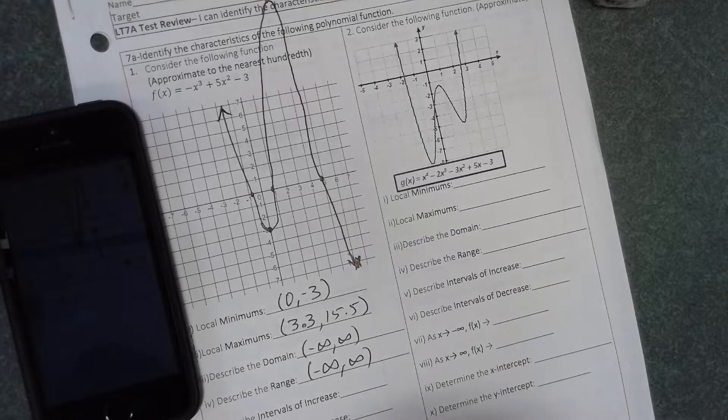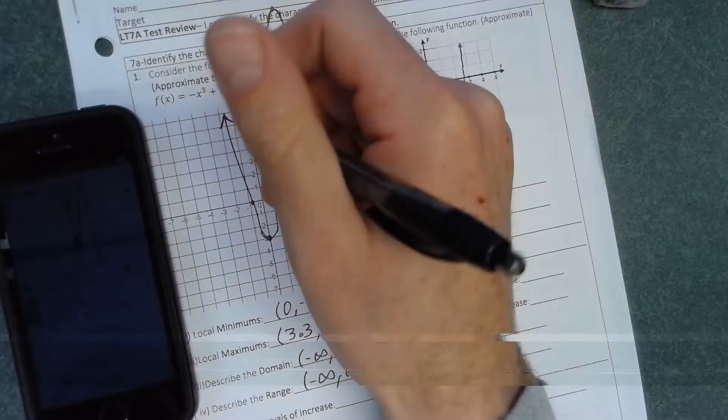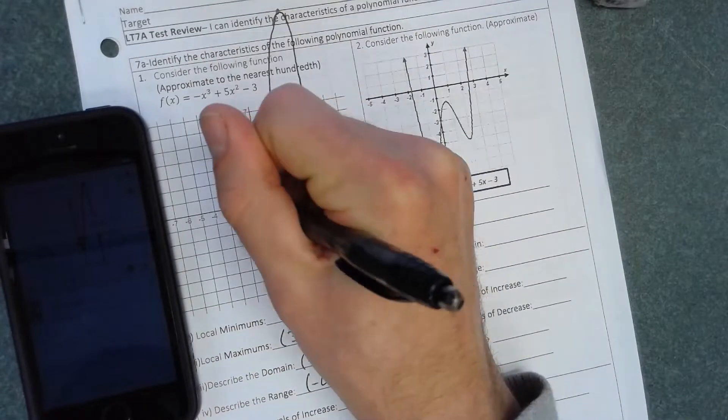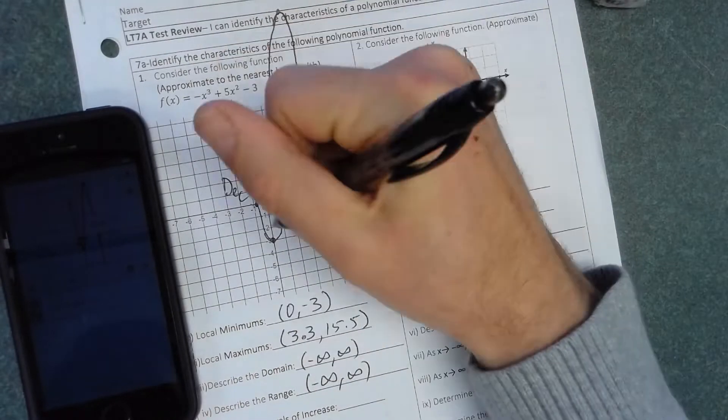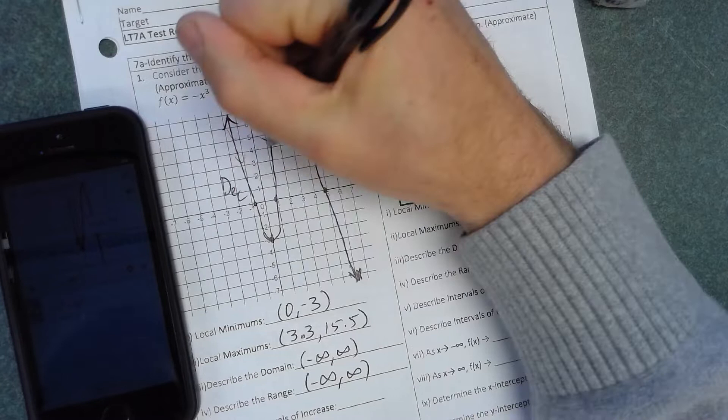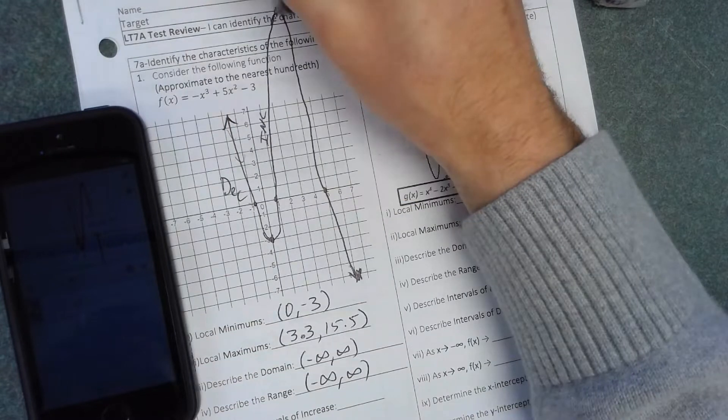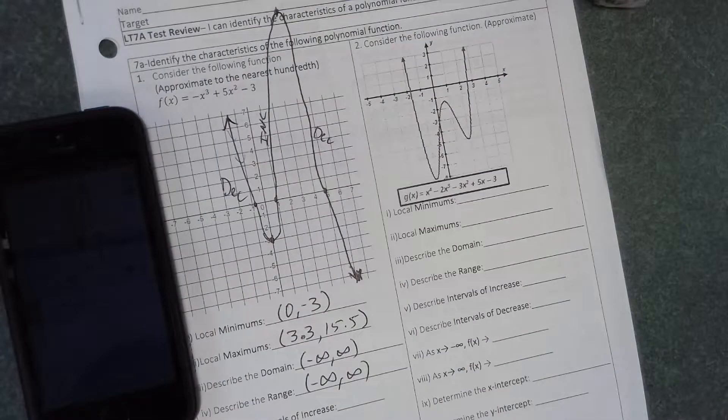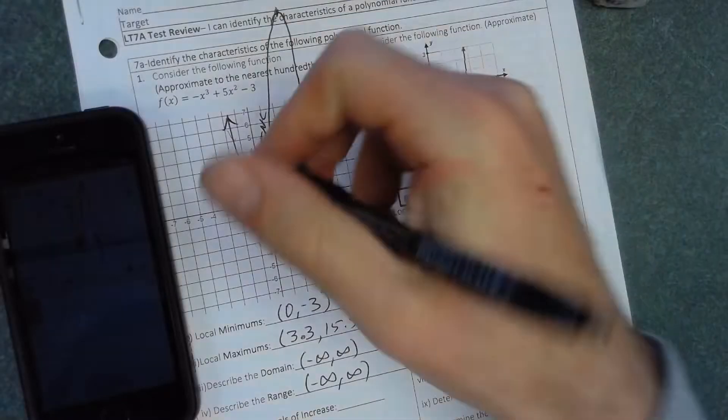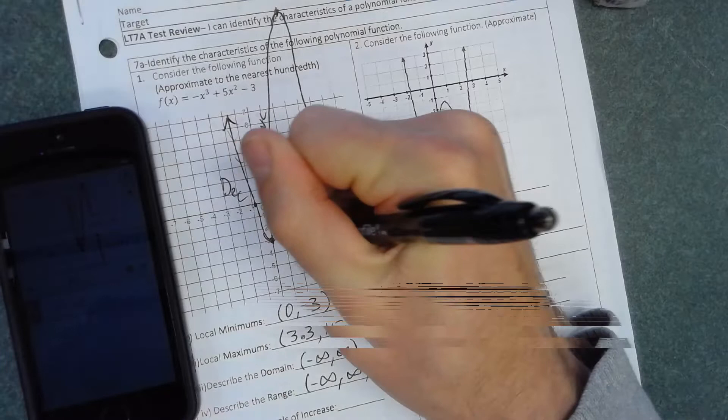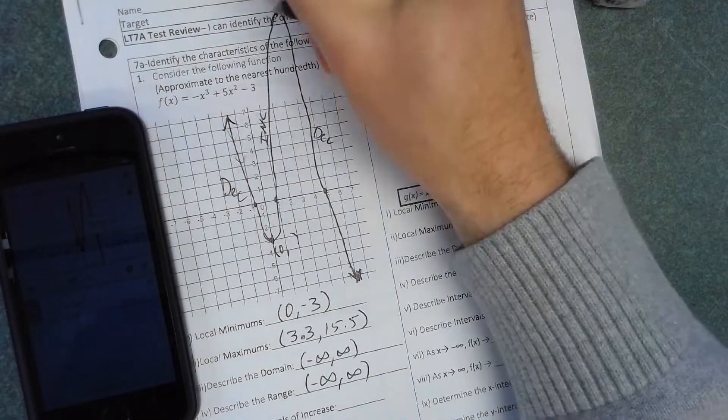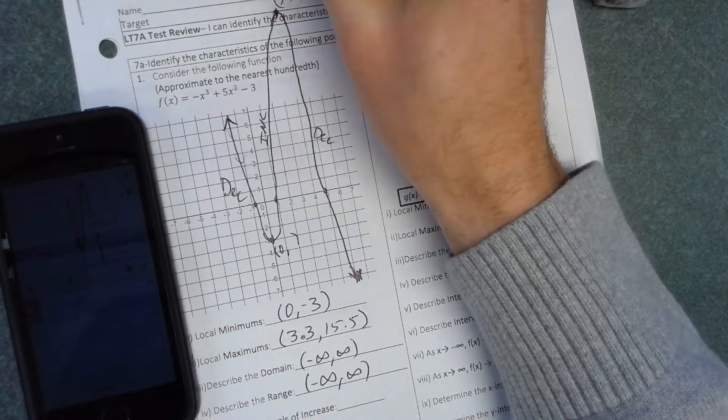Intervals are increasing and decreasing, so this is where we have to label our graph. From left to right, our graph is decreasing until we get to this local minimum, and then it's back to increasing all the way up to this local maximum point. The increasing portion, since that's labeled first here, we always look at the x values. X value here is at 0 and the x value here is at 3.3. Nothing with the y's when we're labeling increasing or decreasing. So increasing from 0 to 3.3.